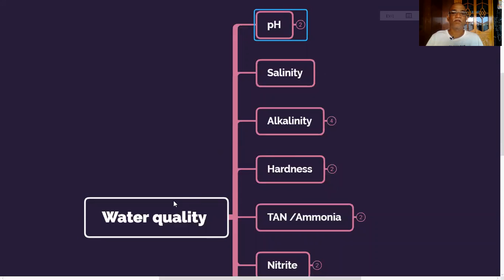Let us see what is water quality. Water quality is the suitability of water for a particular purpose. For example, water quality for washing is different, water quality for drinking is different, and water quality for injection is different. In the same way, if you come to aquaculture, water quality for farming is different, water quality in the nursery is different, water quality in the hatchery is different.